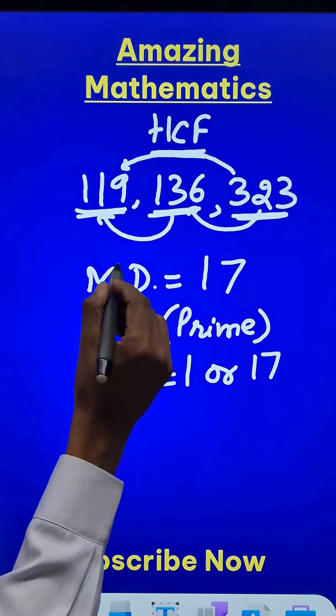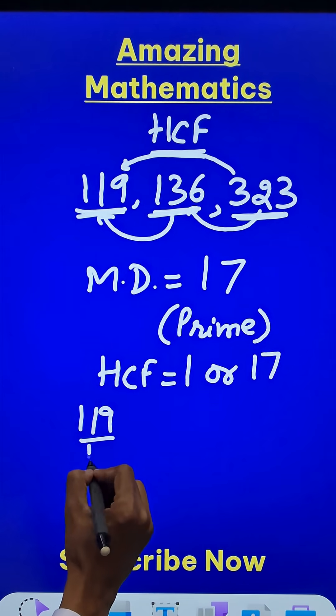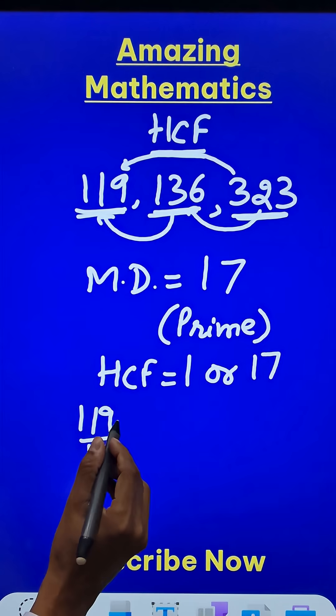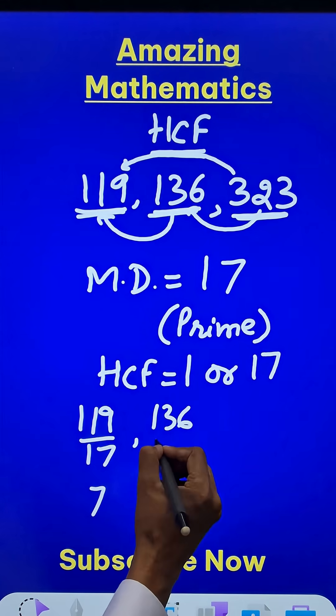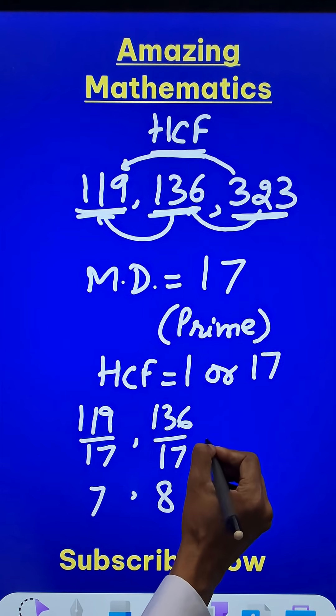If you divide 119 by 17, you get the quotient as 7. And then if you divide 136 by 17, you get the quotient as 8.